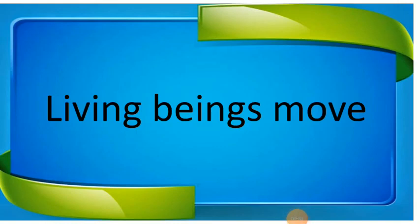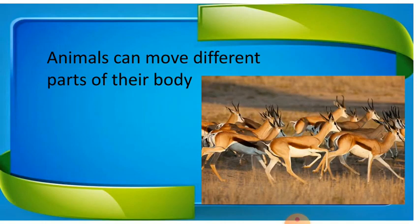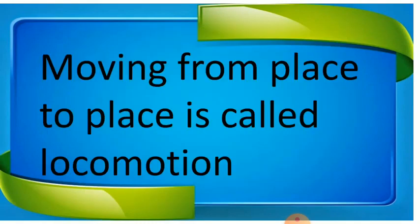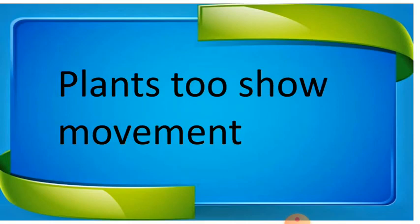Now in this YouTube video we are going to start with the characteristic: living beings can move. Animals can move different parts of their body and they move from one place to another in search of food and shelter. Animals are called locomotive organisms. Moving from one place to another place is called locomotion.